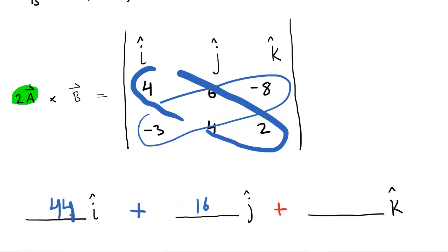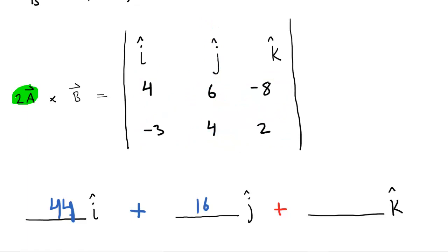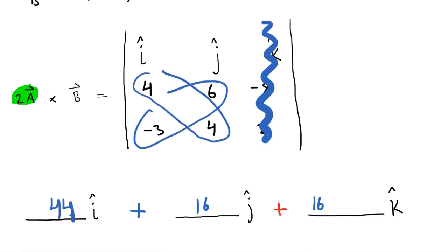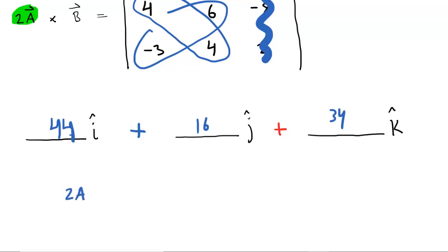Finally, we have to fill in the slot that is represented by k hat. So we'll cross off the column that contains k hat. And then we'll cross multiply with what is left behind. So 4 times 4 is 16. Negative 3 times 6 is negative 18. You'll subtract those, which changes it to 16 plus 18, which is going to give us 34. So we can go back and fill this in as a 34. And that would be how you do the cross product between 2a and b, those vectors. So in other words, the cross product 2a and b is equal to 44 i hat plus 16 j hat plus 34 k hat.